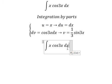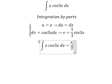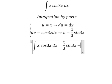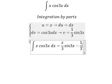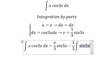So we have u multiplied by v, minus the integral of v times du. So we have x over 3 sine 3x minus 1 over 3 integral of sine 3x dx.